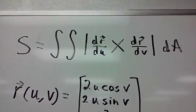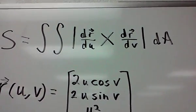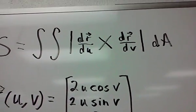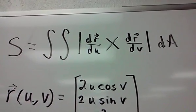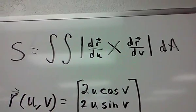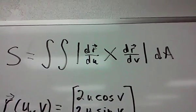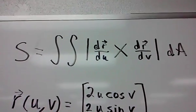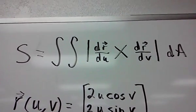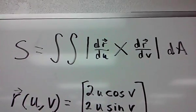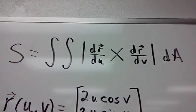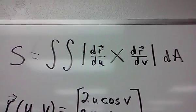In this problem, you are needing to find the surface area of a paraboloid of a function r, which r is a vector that depends on u and v. This is the function, the template you use to find the surface area. It's a double integral of the length of the cross product of the derivatives of r with respect to u and with respect to v.